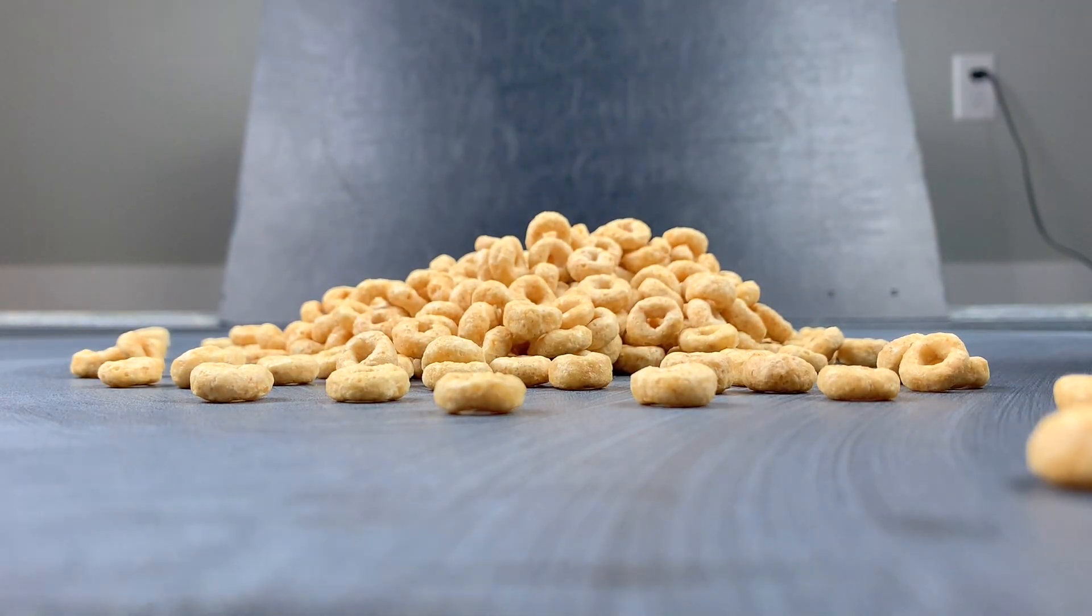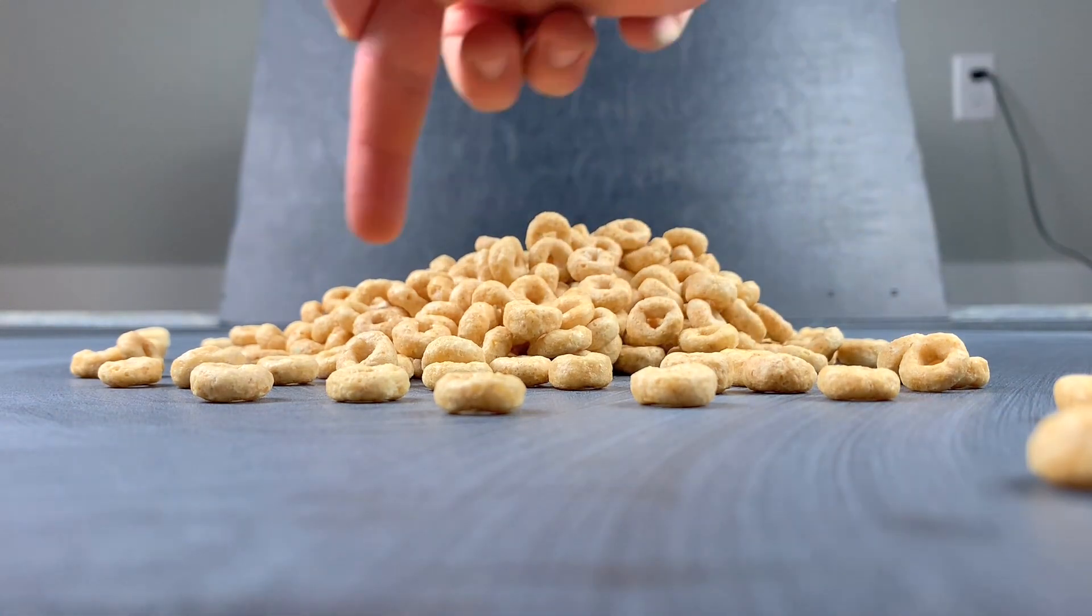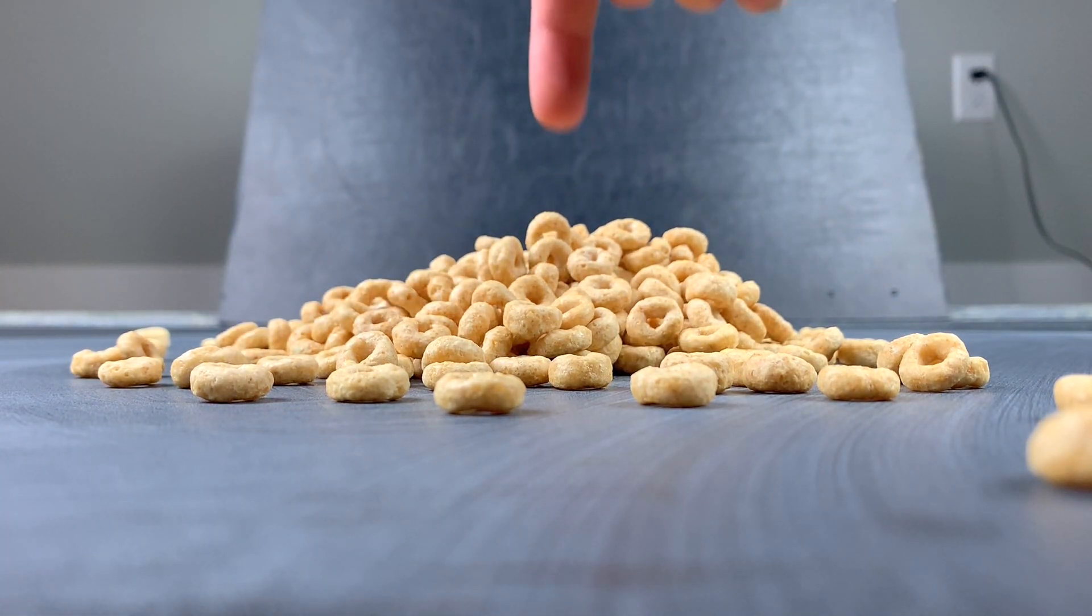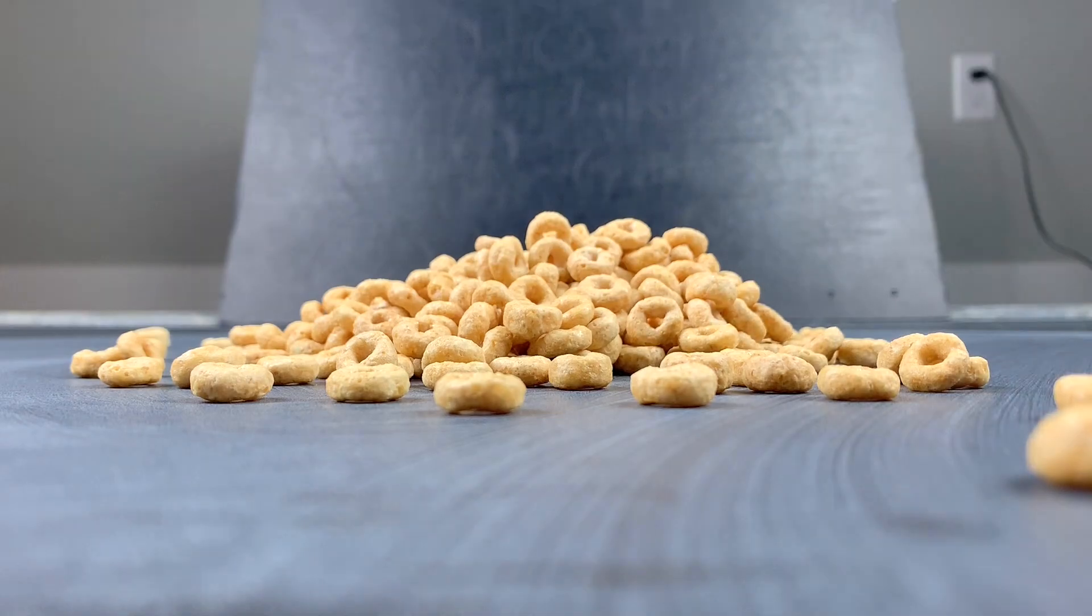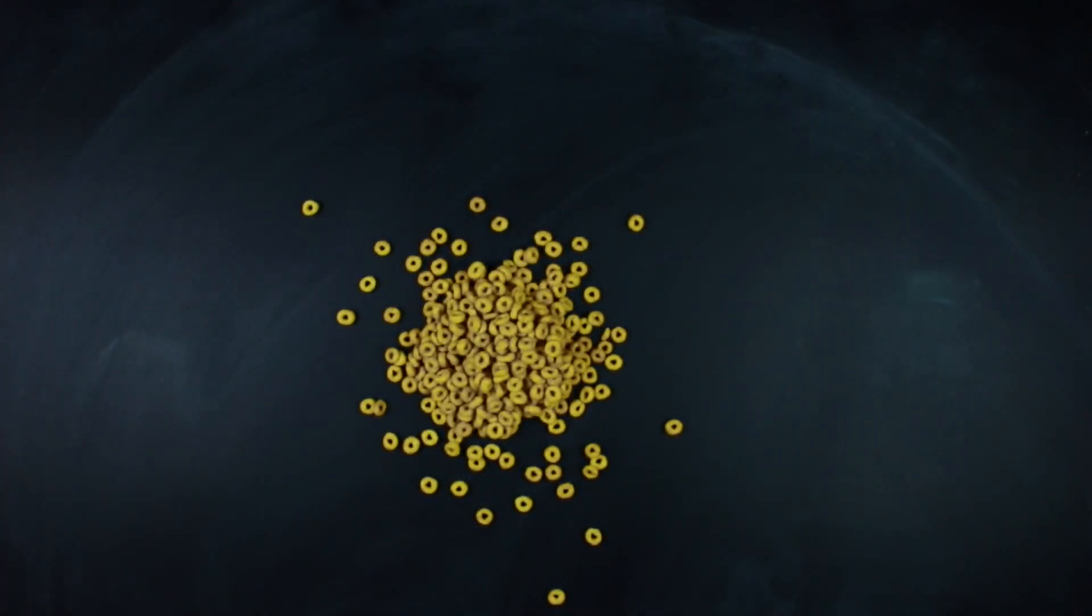Once you're done, if you look at the side, you can see that the average Cheerio landed about here, which is around the same position I was aiming for while pouring. The variance or the spread of the Cheerios would depend on how high you decide to pour it.